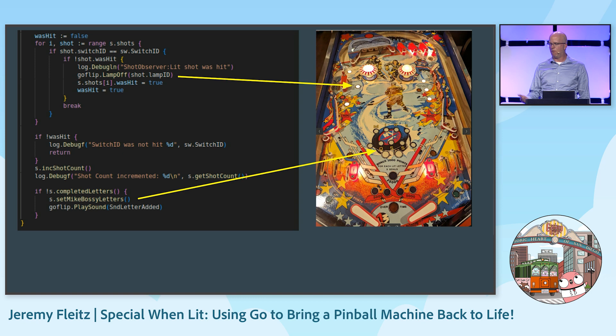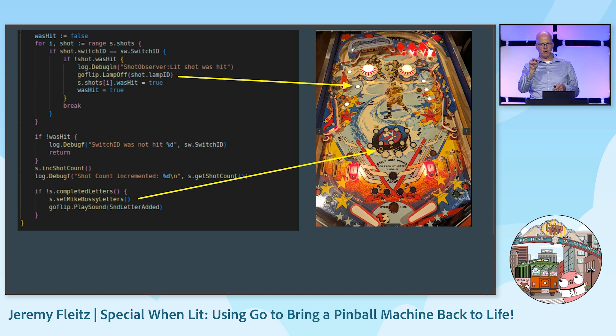Going back to the shot indicators: the switch handler checks which switches were hit and whether the shot was lit. If it was, it turns off the lamp and turns on the corresponding Mike Bossy letter. At the very bottom, if all the letters are completed — if you spell Mike Bossy — two large white indicators light up to show you completed the full letter bank, then everything turns off so you can spell Mike Bossy again in the same ball.